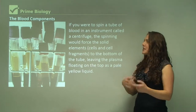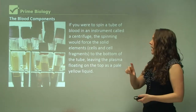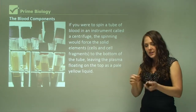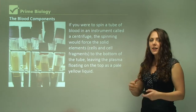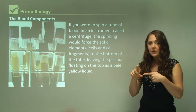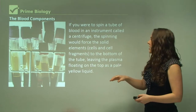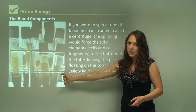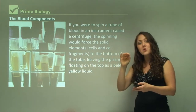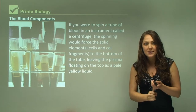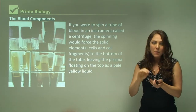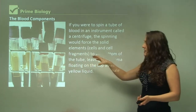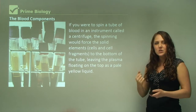If you were to spin a tube of blood in an instrument called a centrifuge — a machine that spins very fast — the blood actually separates into its components. In these tubes you can see it's dark red at the bottom and yellow at the top. The dark red portion is the actual red blood cells, making up the 45% that includes red blood cells, white blood cells and platelets. The top portion is the blood plasma, which has a yellowy liquid appearance.